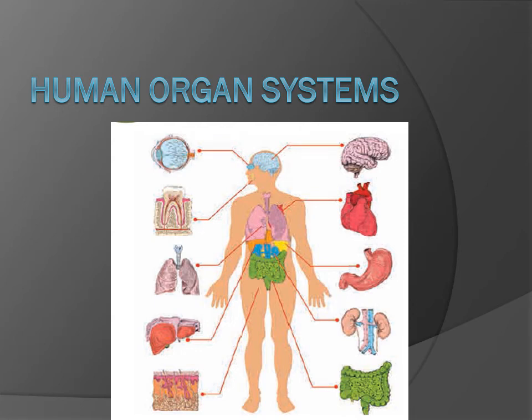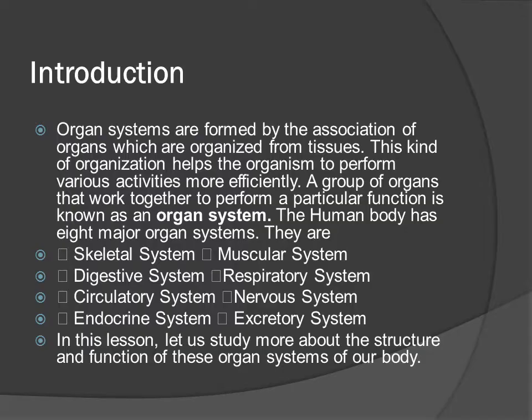Hi friends, welcome to Time to Learn TNPNC. I am going to talk about human organ systems. Organ systems are formed by the association of organs which are organized from tissues. This kind of organization helps organisms to perform various activities more efficiently. A group of organs that work together to perform a particular function is known as an organ system. The human body has 8 major organ systems.